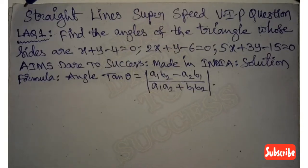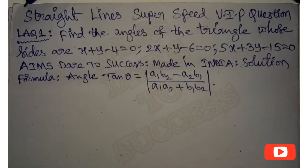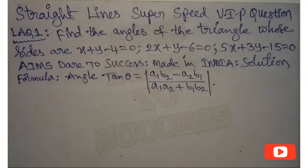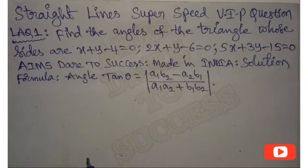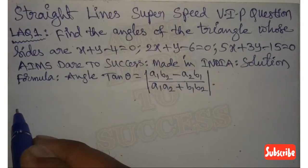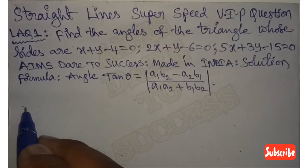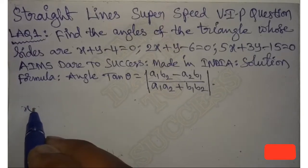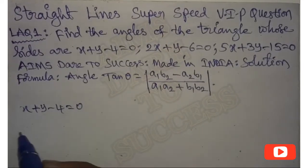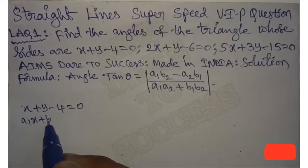The question is: find the angles of the triangle whose sides are x plus y minus 4 is equal to 0, 2x plus y minus 6 is equal to 0, and 5x plus 3y minus 15 is equal to 0. By using these sides we can find the angles using the angle formula: tan theta equals mod of (a1*b2 minus a2*b1) divided by (a1*a2 plus b1*b2).